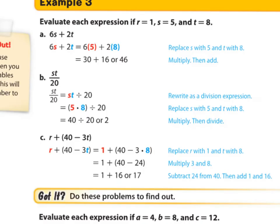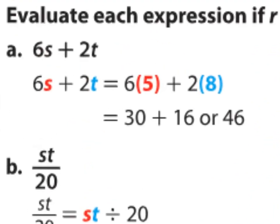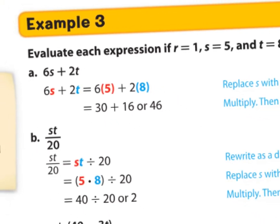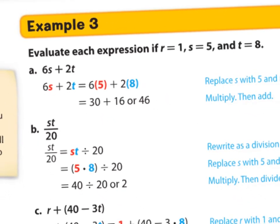For example 3, please take a look at the different operations that we have to do. Notice that we have a number, or a coefficient, and a variable. And you know that between these two is multiplication plus another multiplication. 2 times t. We are being given the values of each one. We are told that r is 1, s is 5, and t is 8. So we just replace the variable. s is 5. There it is. And t is 8. There it is. So 6 times 5 is 30. And 2 times 8 is 16. And then we add and we get 46.